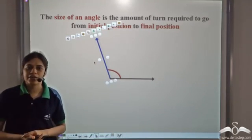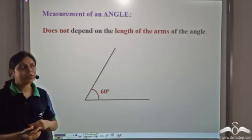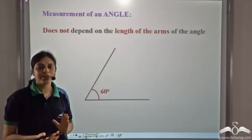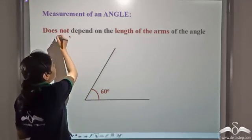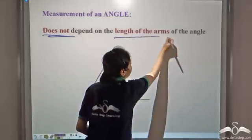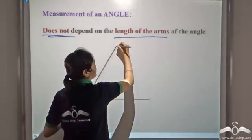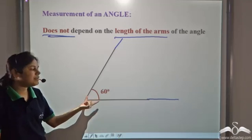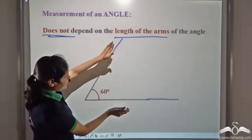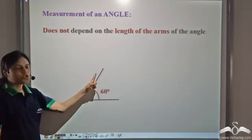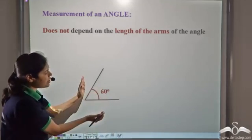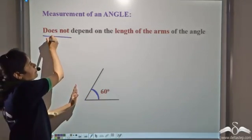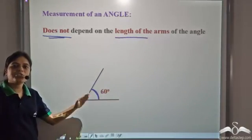The measurement of an angle does not depend upon the length of the arms because it depends on the amount of turn required to go from the initial to the final position. Even if I increase the length of the arms, the amount of turn remains the same and the angle remains sixty degrees. Similarly, if I decrease the length of the arms, the angle still remains sixty degrees. It simply depends on the amount of turn.